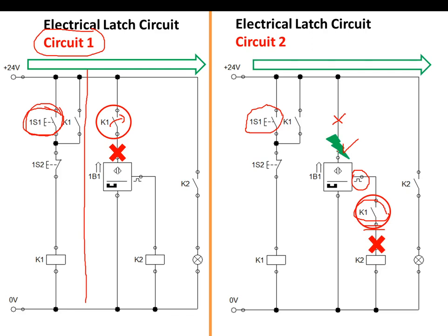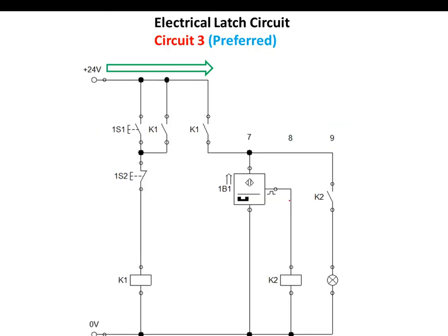Whereas in circuit two, the magnetic switch is always on, even though the main switch is off, and this is mainly due to the connection here. Moving to the third circuit and the most preferred circuit, where we use K1 as well, the contact of the latch relay and the latch circuit.